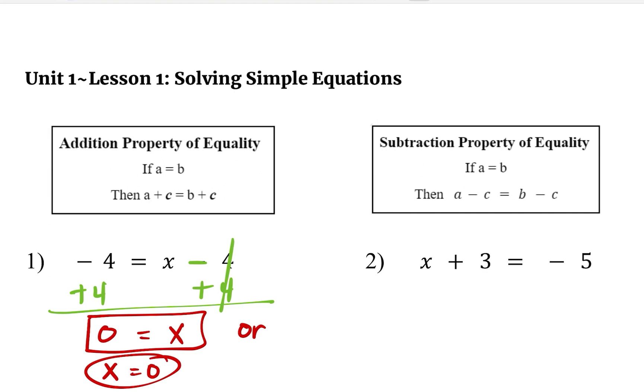Number two, we are going to apply subtraction property of equality, which means we are going to subtract whatever number we need to subtract in order to isolate x. So for number two, x has a company and that is a positive 3. Inverse of positive 3 is a minus 3. So we are going to do that on both sides of the equation, which will leave us with x equals negative 5 minus 3, which is negative 8.